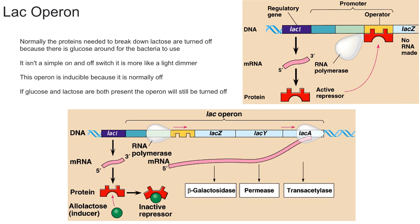In this video I'm going to explain what the lac operon is and how it works. For some background information, the lac operon is present in bacteria. Normally the proteins needed to break down lactose are turned off because the bacteria would prefer to use glucose. The lac operon is essentially just a fancy way of saying all of the genes that have to do with lactose breakdown.